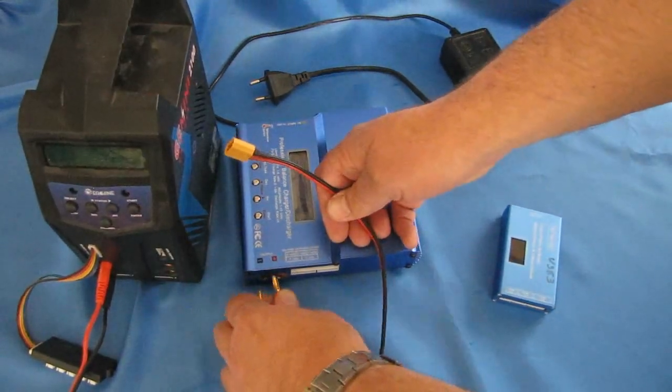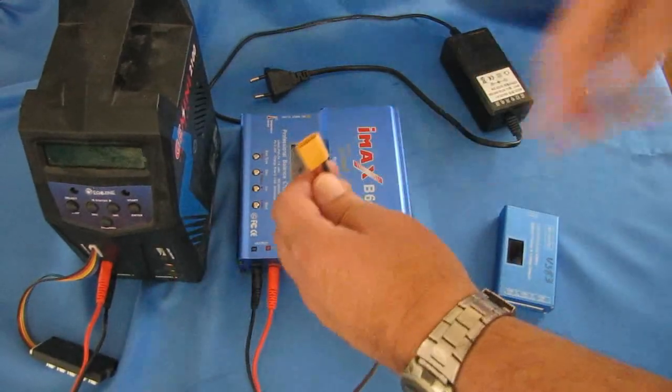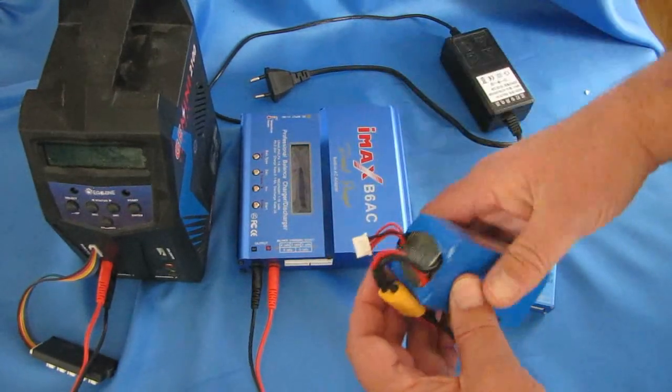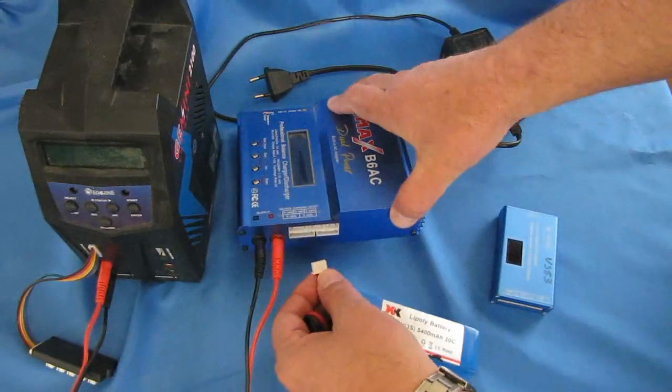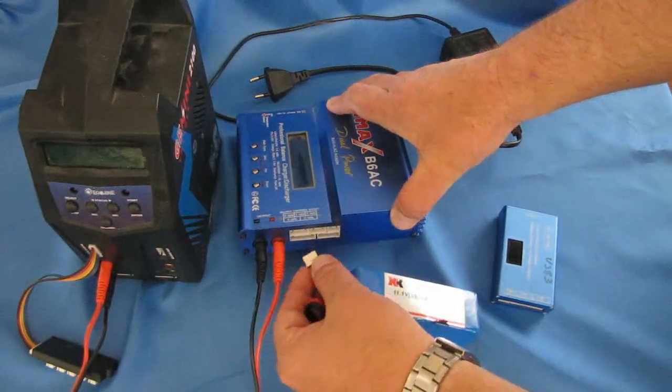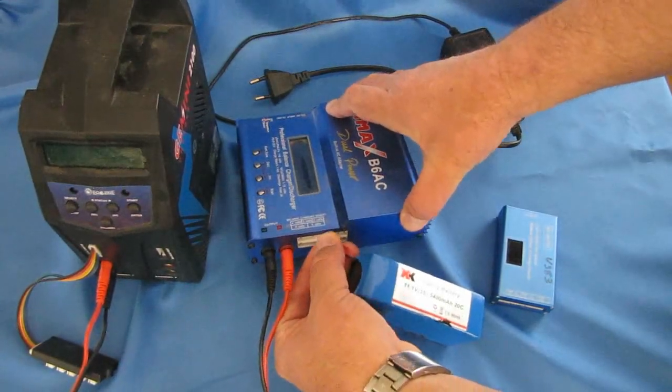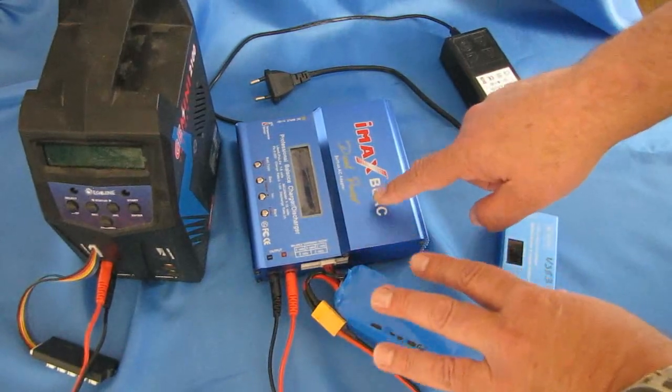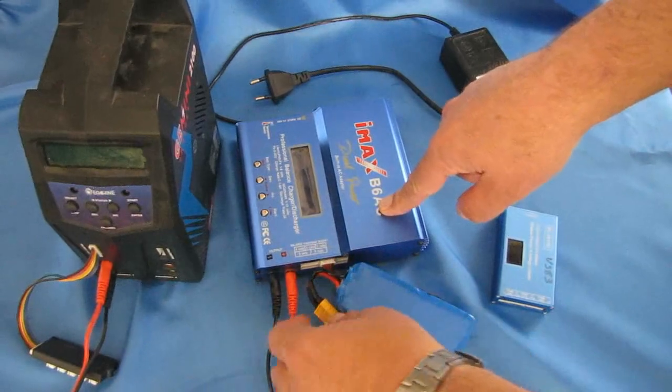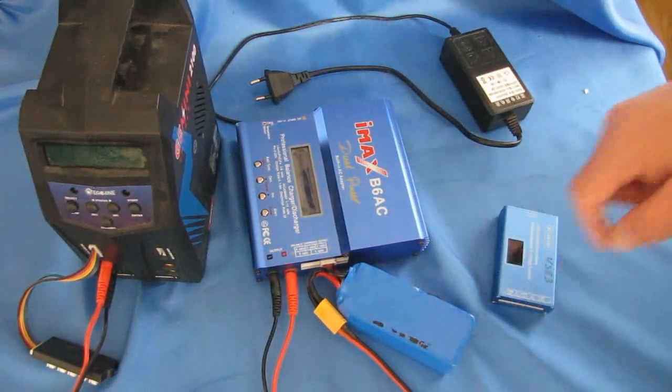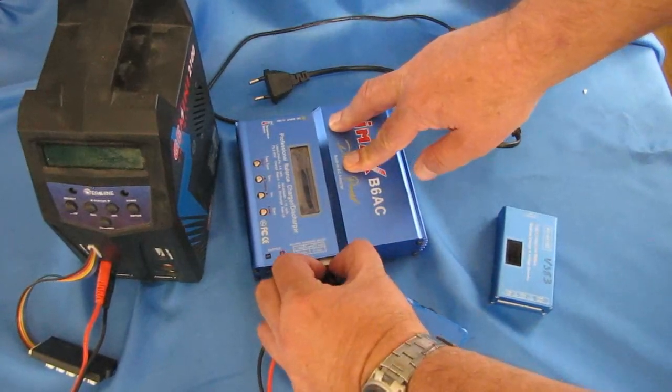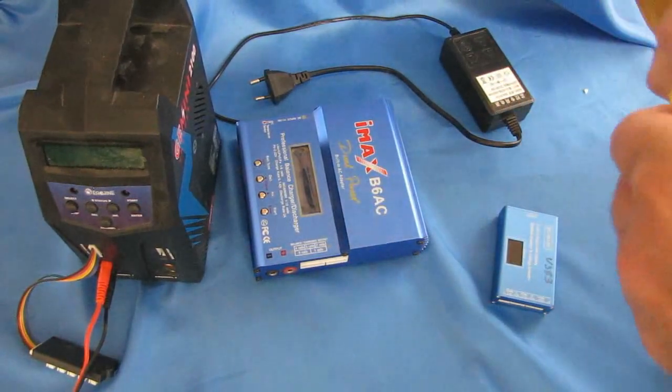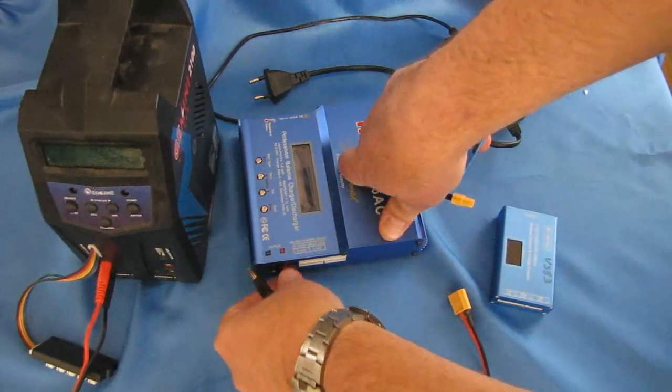This one charges primarily through this particular lead. When you charge with one of these, you have to plug both the main power lead into the battery and also plug in the balance plug into the balance charger. If you don't do that, it's going to tell you connection broken. Always remember that. That took me months to figure out as a beginner. You need to plug both cables in to properly charge a balance charger battery. That's a quick tip that new flyers tend to stumble upon.